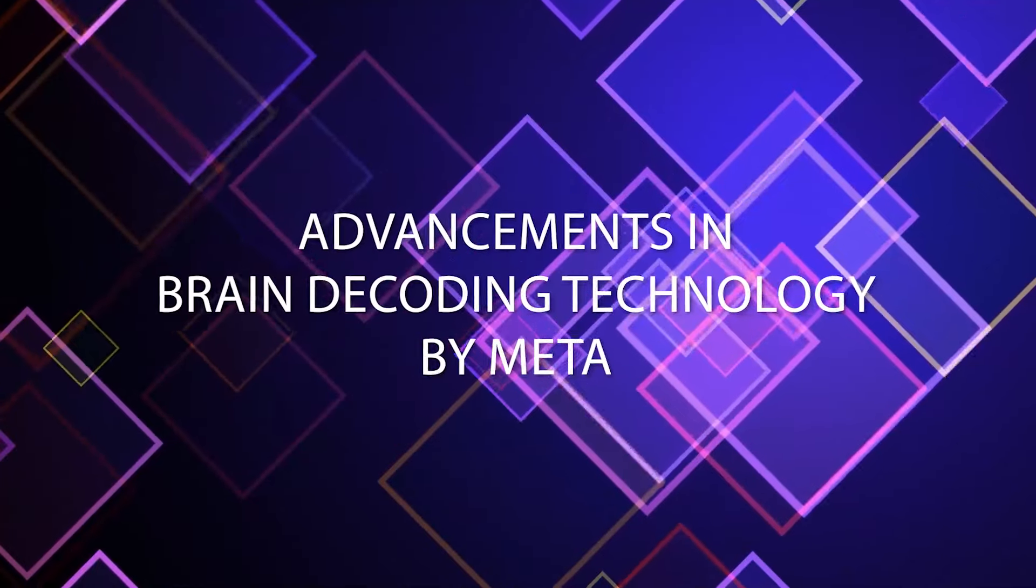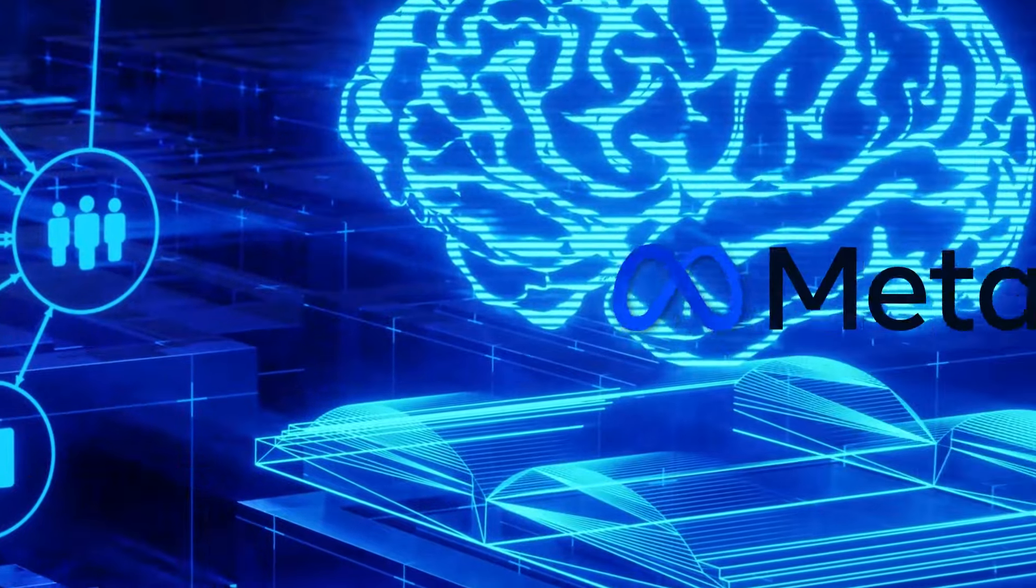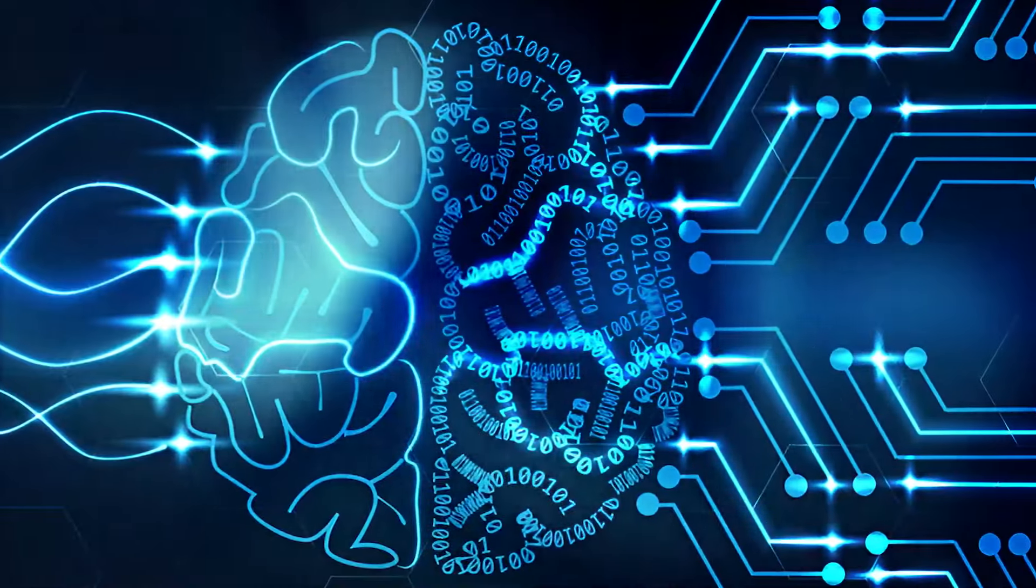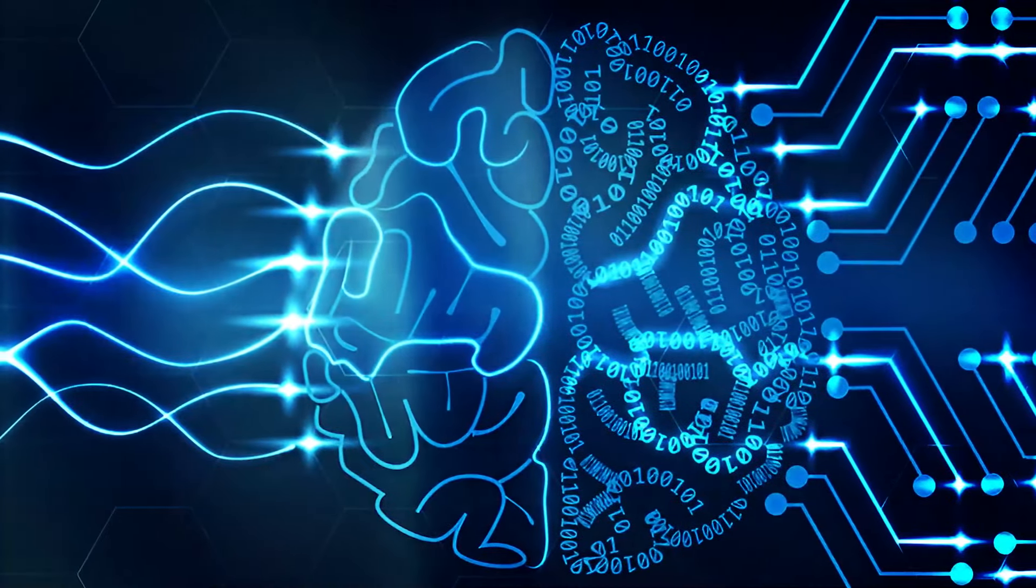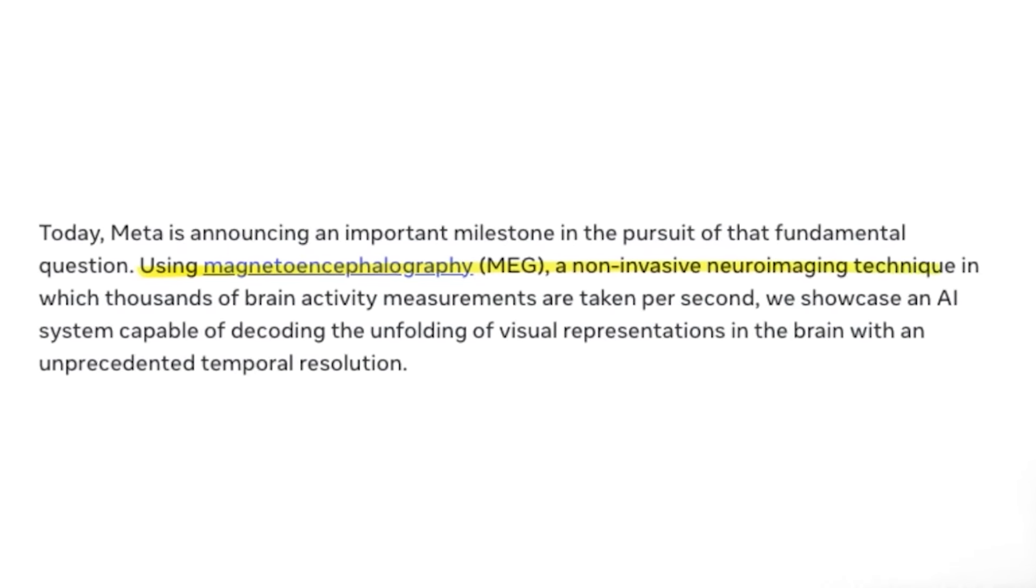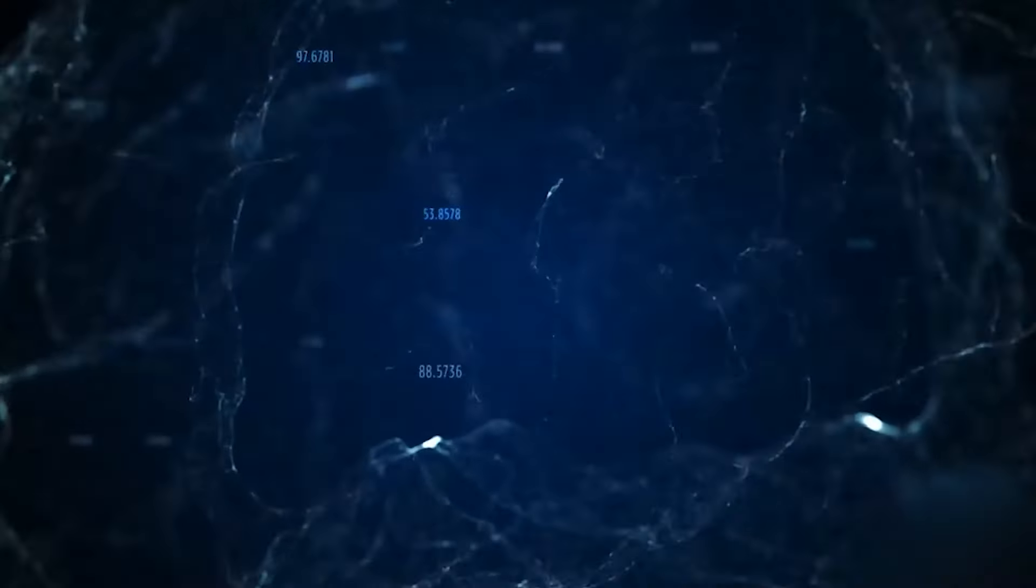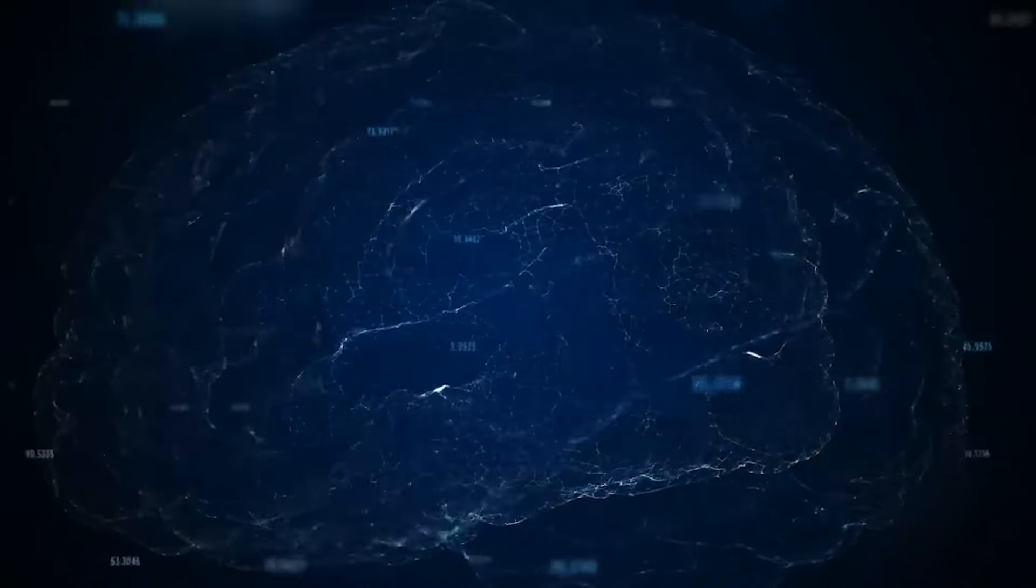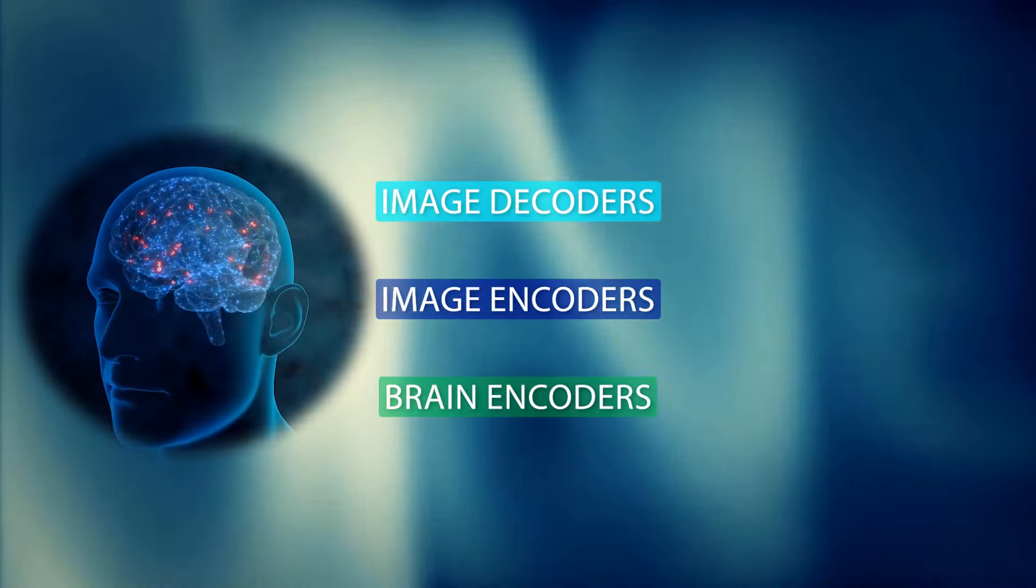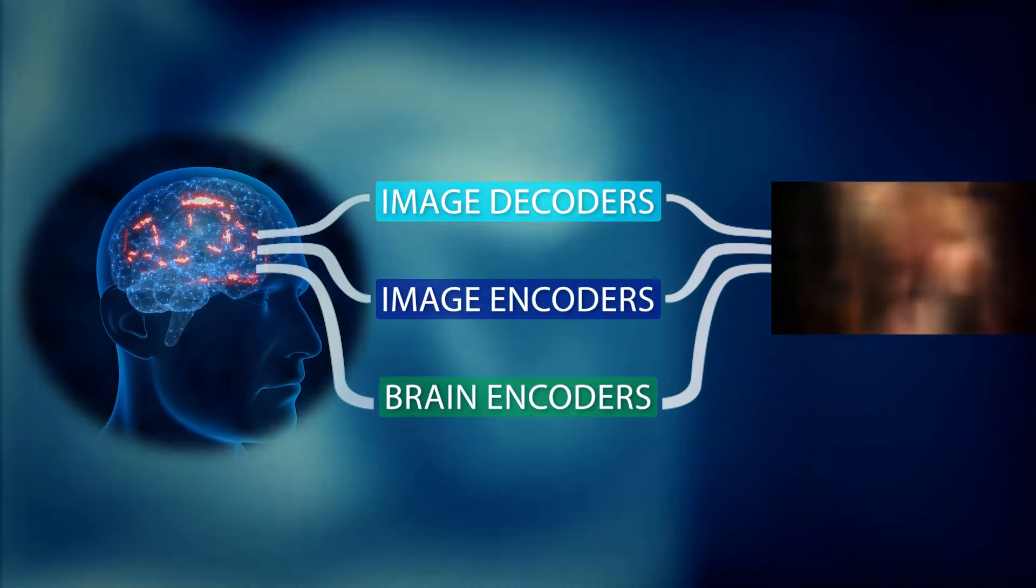In addition to the University of Texas breakthrough, companies like Meta have also made significant strides in mind-reading AI technology. Meta unveiled an AI system capable of analyzing brain waves and predicting real-time visual perceptions. Utilizing MEEGE technology, Meta's system captures thousands of brain activity measurements per second, providing unparalleled insights into human visual experiences. By combining image encoders, brain encoders, and image decoders, Meta has achieved remarkable accuracy in reconstructing images perceived by the human brain.